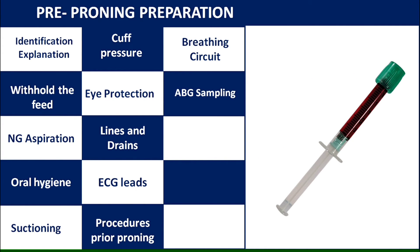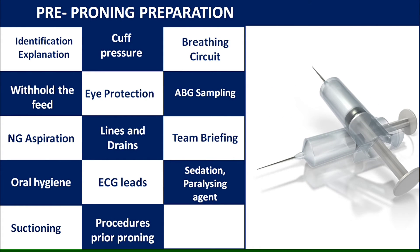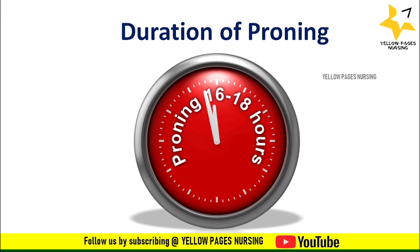Team briefing: the team should discuss and understand each member's responsibilities for positioning. Next is administration of sedation or paralyzing agent as per the order. Pre-oxygenate the patient prior to proning. These are the points to be followed before giving prone position to the patient.